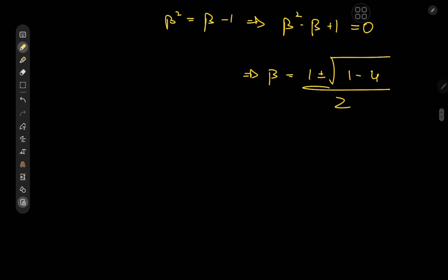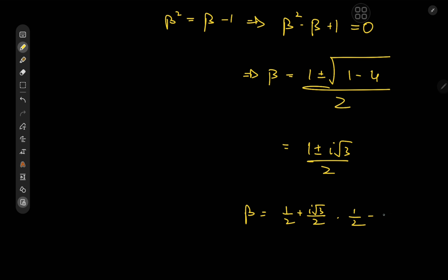So that means we have one plus or minus i times root three, all over two. So beta equals one half plus i times root three over two, or it could be one half minus i root three over two.